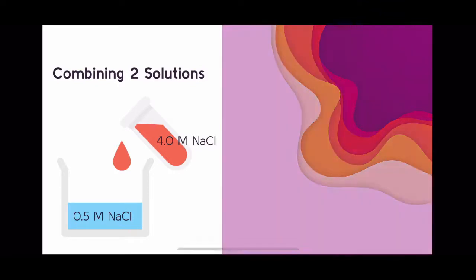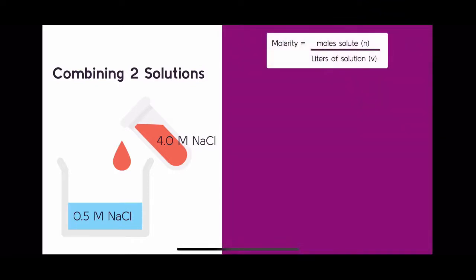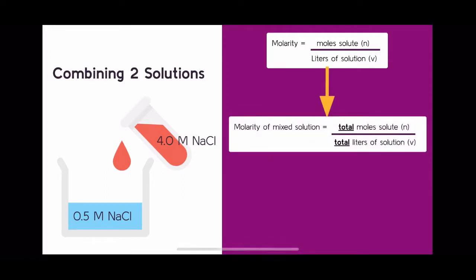It's actually fairly simple. Remember that molarity is equal to the moles of solute (n) divided by liters of solution (v). When we mix two solutions with different molarities, we simply take the total moles of solute from both solutions divided by the total liters of solution after mixing to figure out the molarity of that new mixed solution.